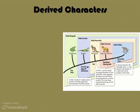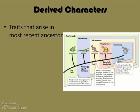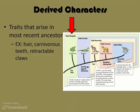Linnaeus focused on observable traits to classify organisms, but cladistic analysis is more precise. It focuses on derived characters — traits that arose in the most recent common ancestor. Studying the cladogram, we find derived characters such as hair, carnivorous teeth, and retractable claws. Today's biologist considers when and where those traits appeared in evolutionary time. For example, four limbs is a derived character for the entire tetrapoda clade. Hair is a derived character for the clade mammalia, but four legs is not — because four legs comes before even amphibians, so the trait belongs only to that clade.